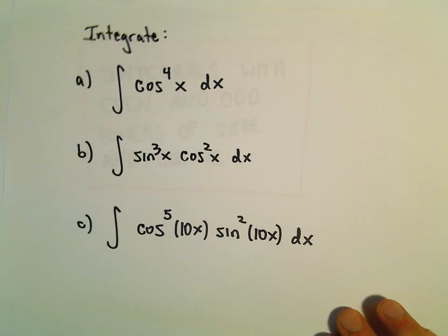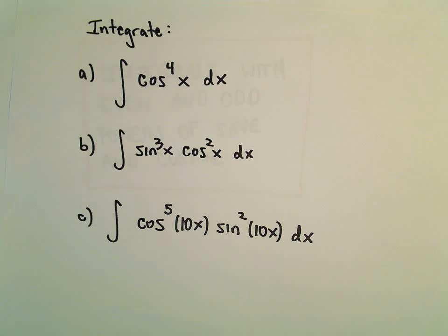Alright, in this example we're going to look at some more integration of sine and cosine. In part a here we have cosine to the 4th x dx.